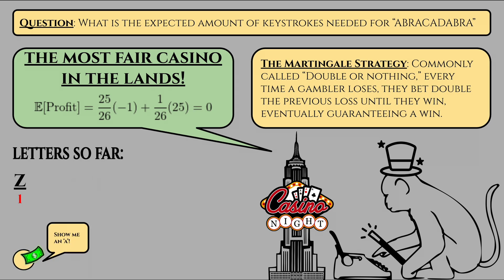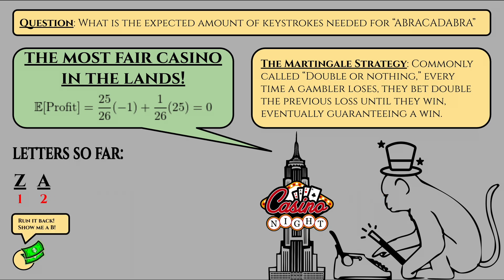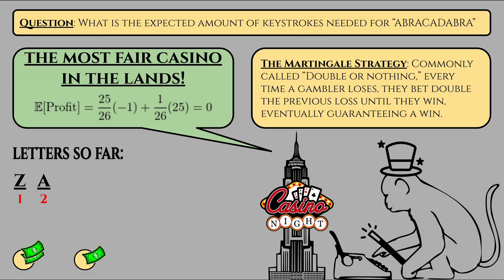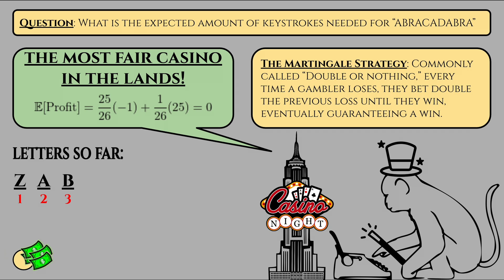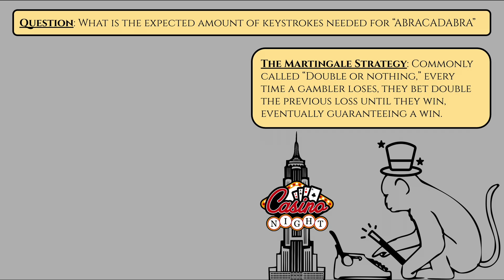If they win, suppose they take all of their winnings including the initial bet, and bet that the next letter will be B. If they win again, they just keep using all the money they currently possess to guess the next letter of abracadabra — i.e., R, then A, then C, and so on. This way, if they ever lose, they'll only ever have lost $1 of their own money. Think of it like the reverse martingale strategy we just talked about. Note that just because a gambler won doesn't mean a new one won't come up for the next letter.